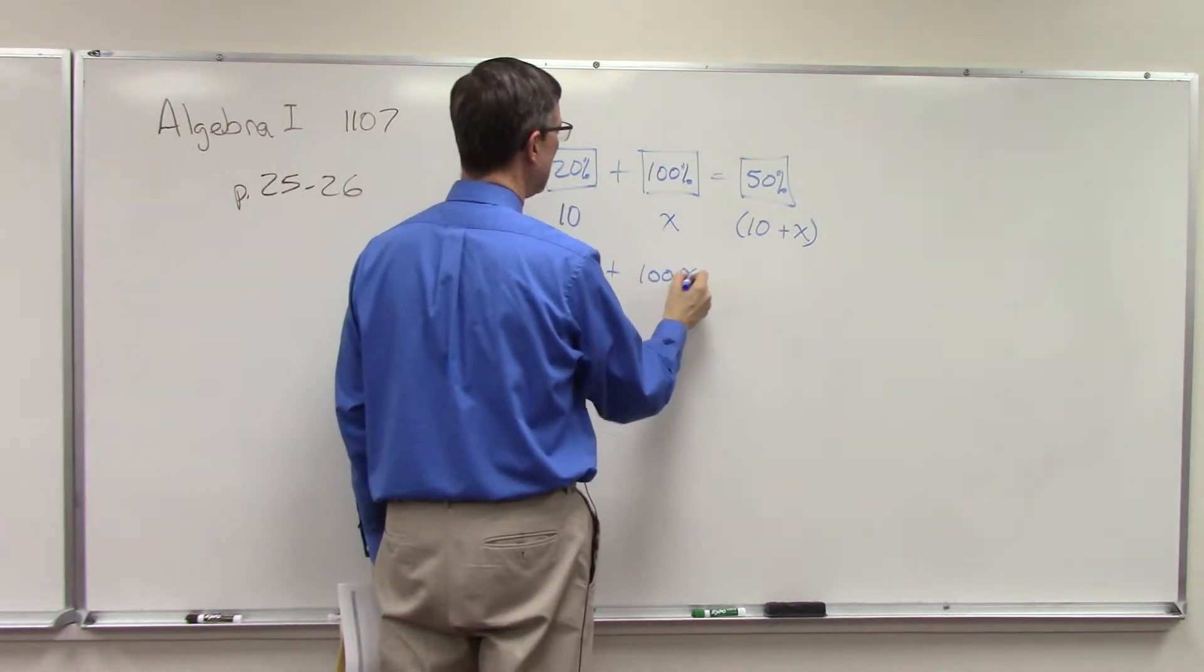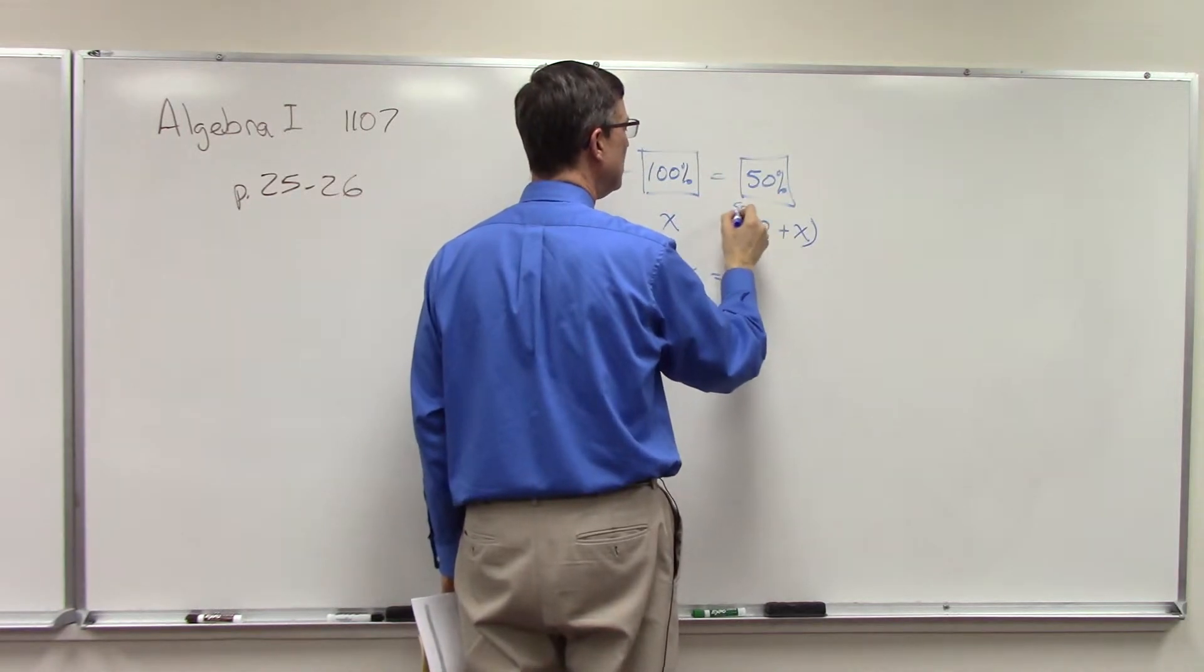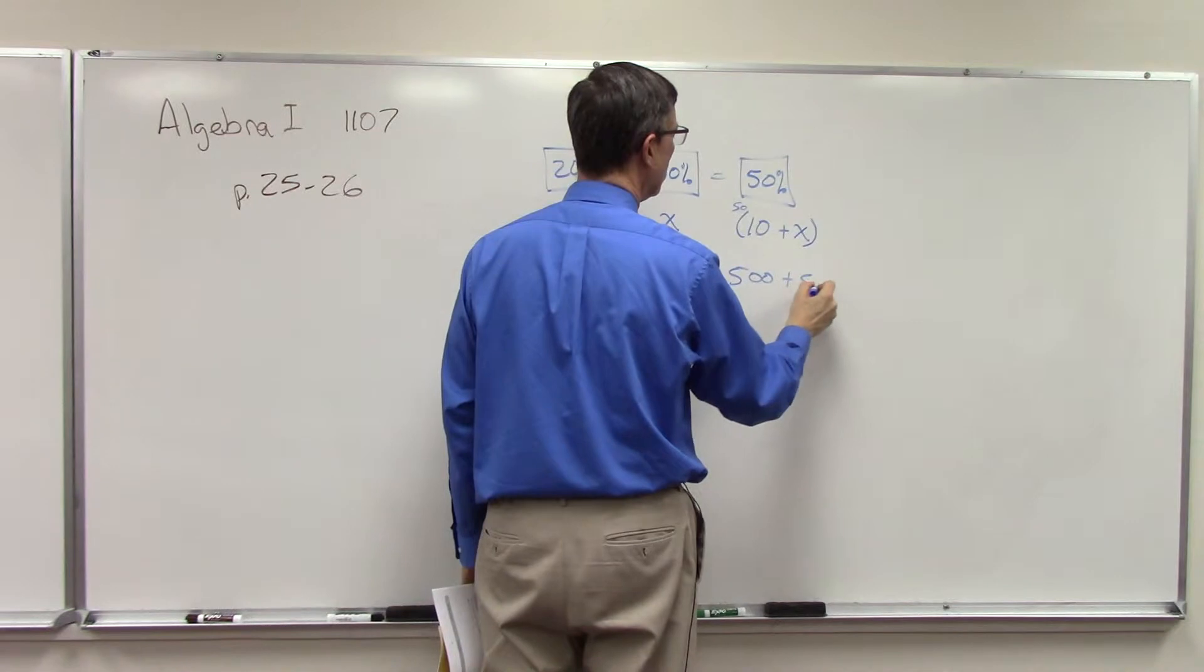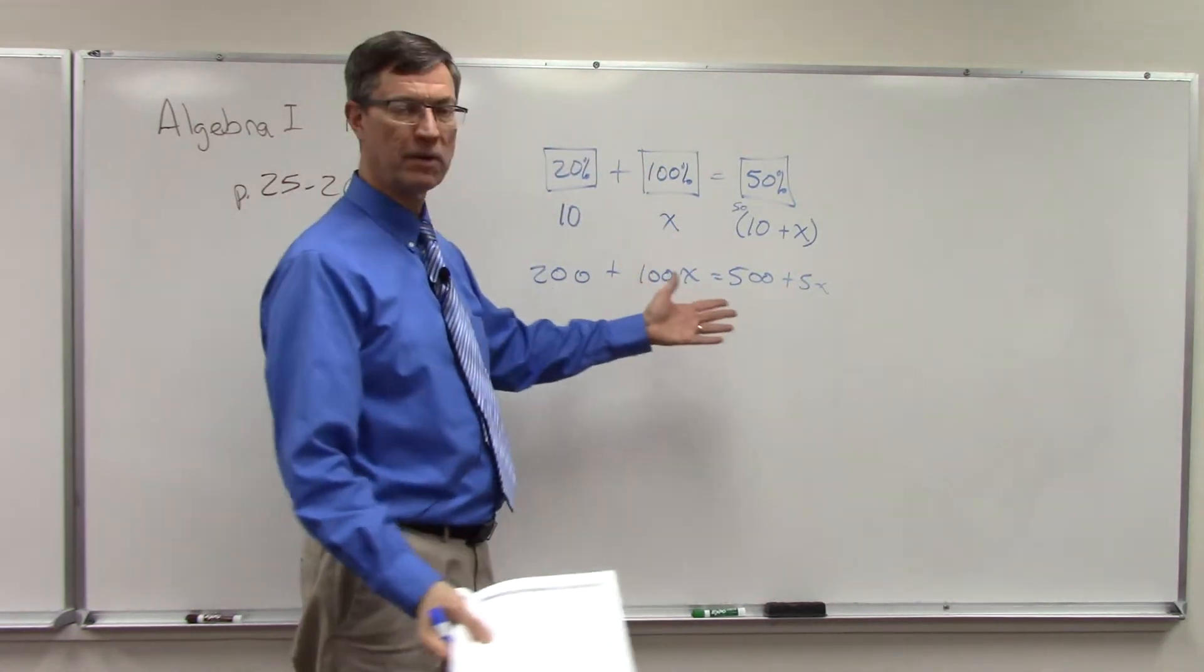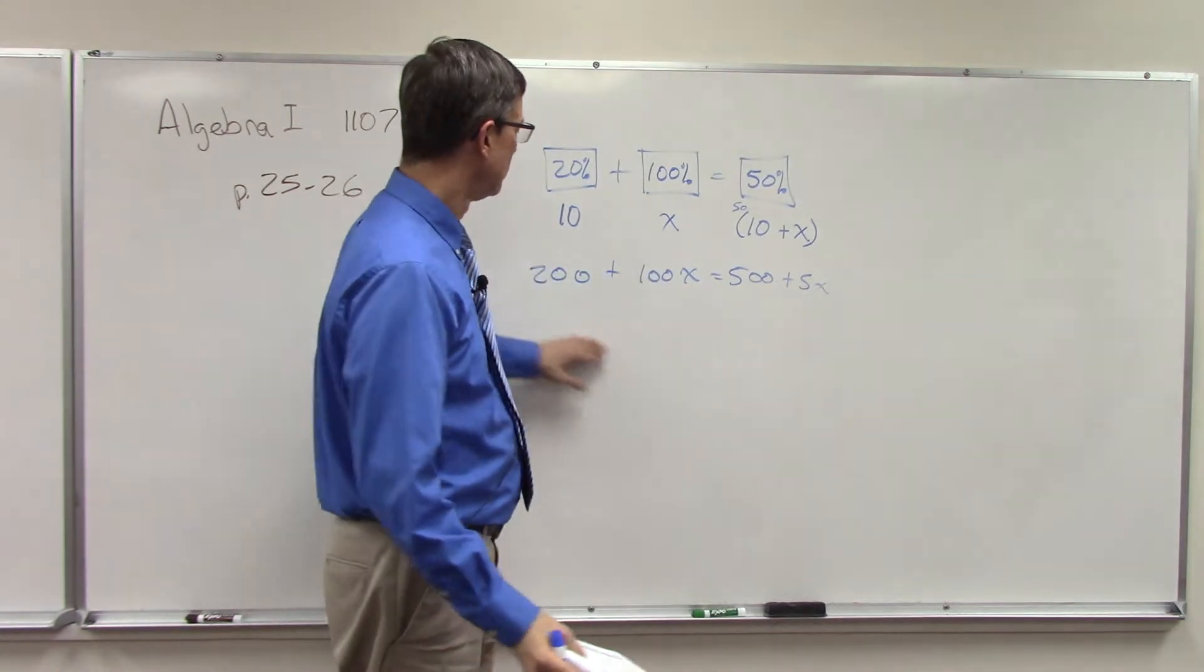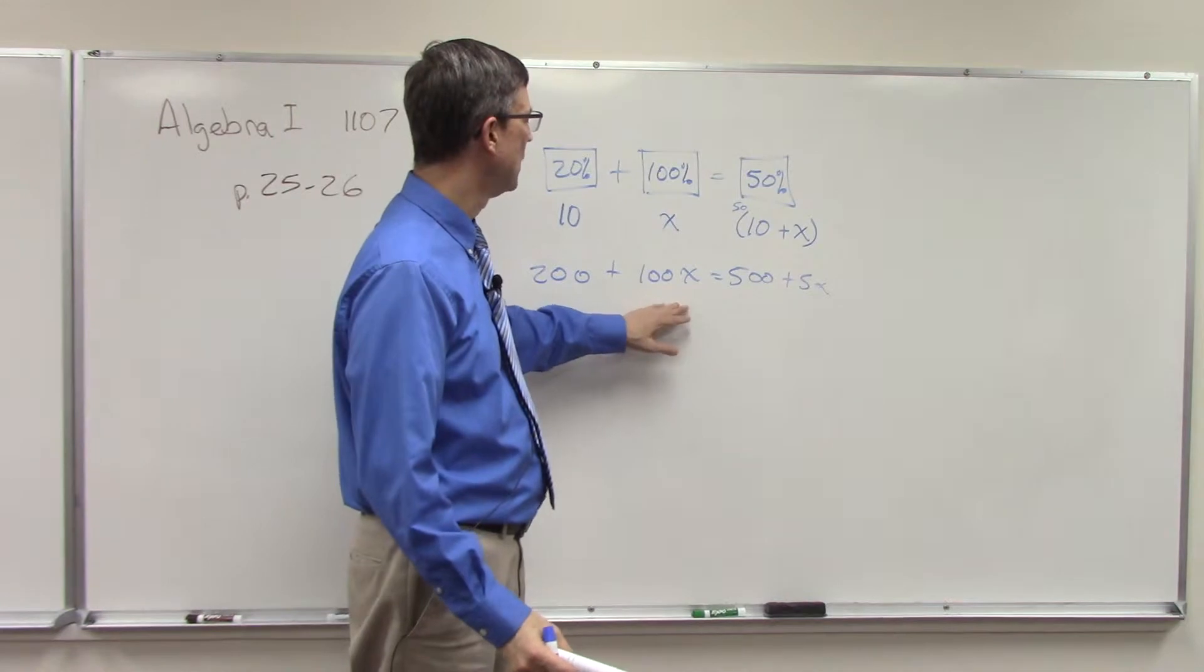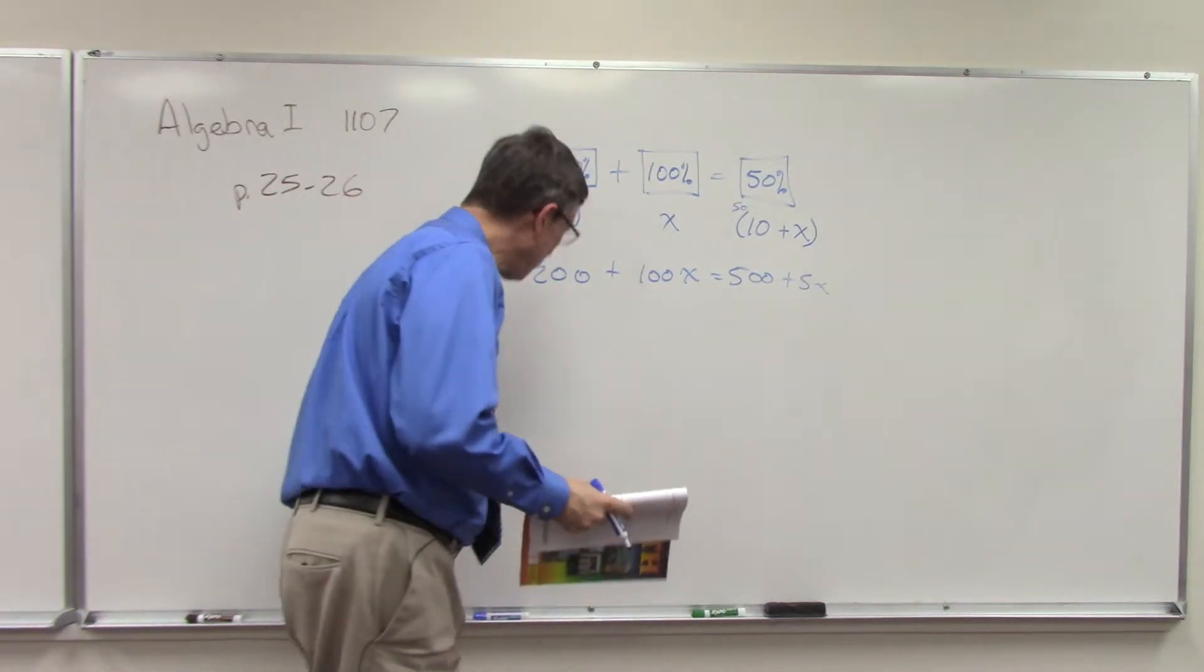Plus 100x. And now multiply, it's kind of like distributive property, 50 times both of these, so 500 plus 50x. I'm not going to finish it. You can solve, maybe subtract the 200 from both sides, subtract 50x from both sides, solve for x. I'll let you finish that one.